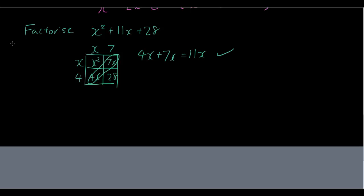Check that the diagonal adds up to the term in the middle. Yes, it does. So therefore the answer is x plus 7, x plus 4. Alright, these are your answers. These are your answers.